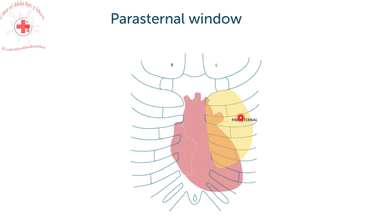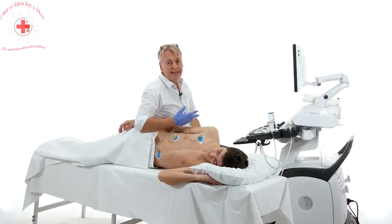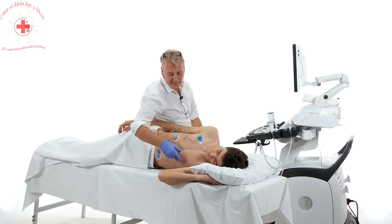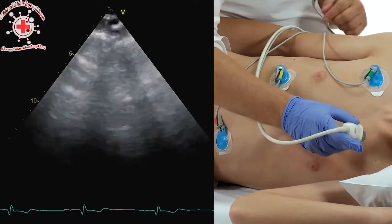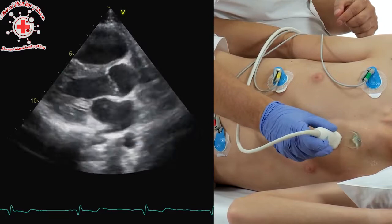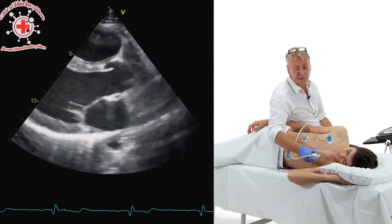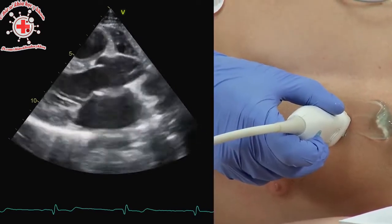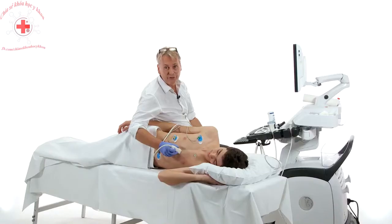In this lecture we'll talk about the parasternal window. Usually you will image either in the third or in the fourth intercostal space. The parasternal window is on the left side of the sternum and you should start at the top and just move the transducer down until you see an image. In this case the parasternal window is very far cranial, somewhere in the third intercostal space. In some patients you'll have to move further down into the third or even fourth intercostal space.